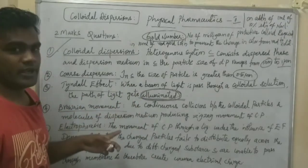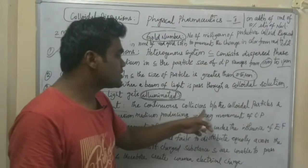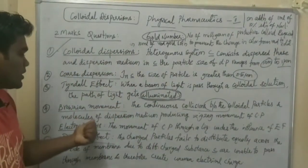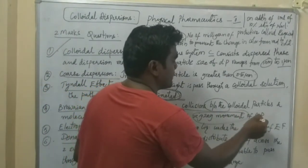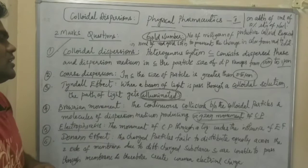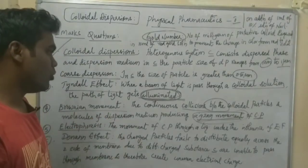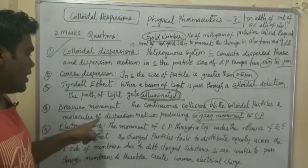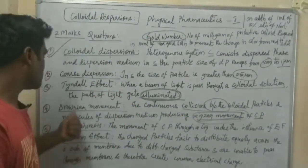Next is Brownian movement. It is defined as the continuous collisions between the colloidal particles and molecules of dispersion medium, producing a zigzag movement of colloidal particles. That zigzag movement is called as Brownian movement or Brownian motion.